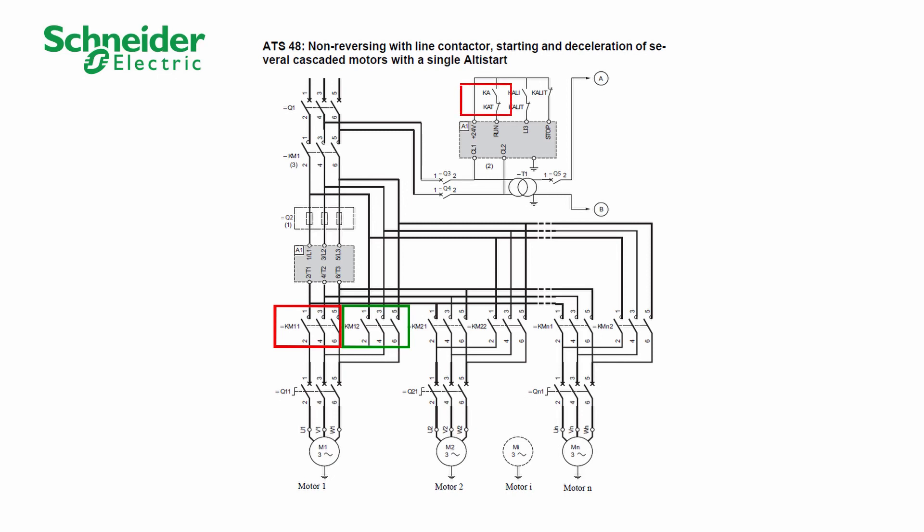Open KA. To start the second motor M2, close KM21, Q21 and KA. The motor starts following the parameters of the soft starter.